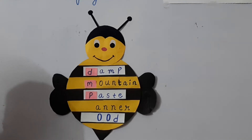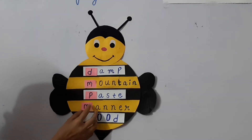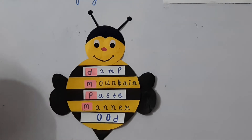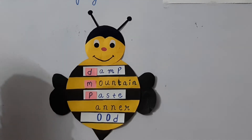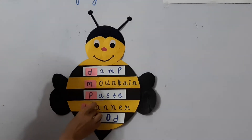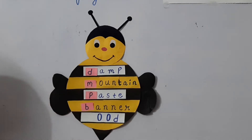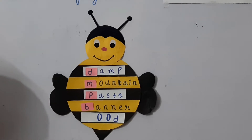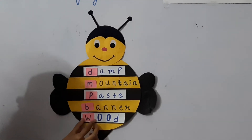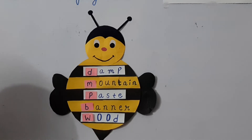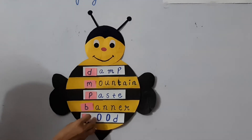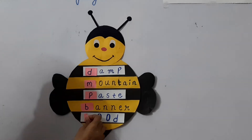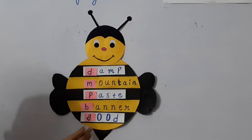The next one — if I add M, what will it become? M-A-N-N-E-R, manner. And if I add B, what will it become? B-A-N-N-E-R, banner. Manner and banner. The next one — if I add W, what will it become? W-O-O-D, wood. And the rhyming word for wood will be good. G-O-O-D, good. Wood and good.